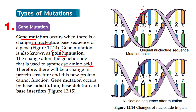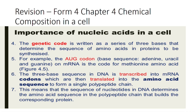This change alters the genetic code that is used to synthesize amino acids. The genetic code is written as a series of three bases that determine the sequence of amino acids in a protein. Remember, amino acid is the monomer of protein. For example, the AUG codon — adenine, uracil, and guanine — is the code for the amino acid methionine.